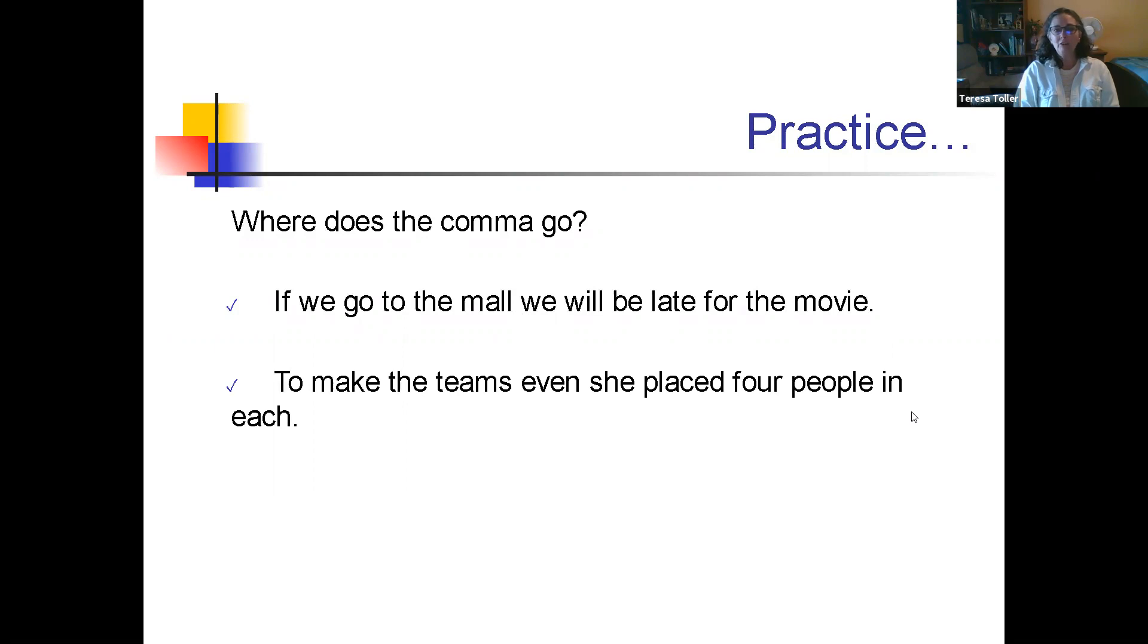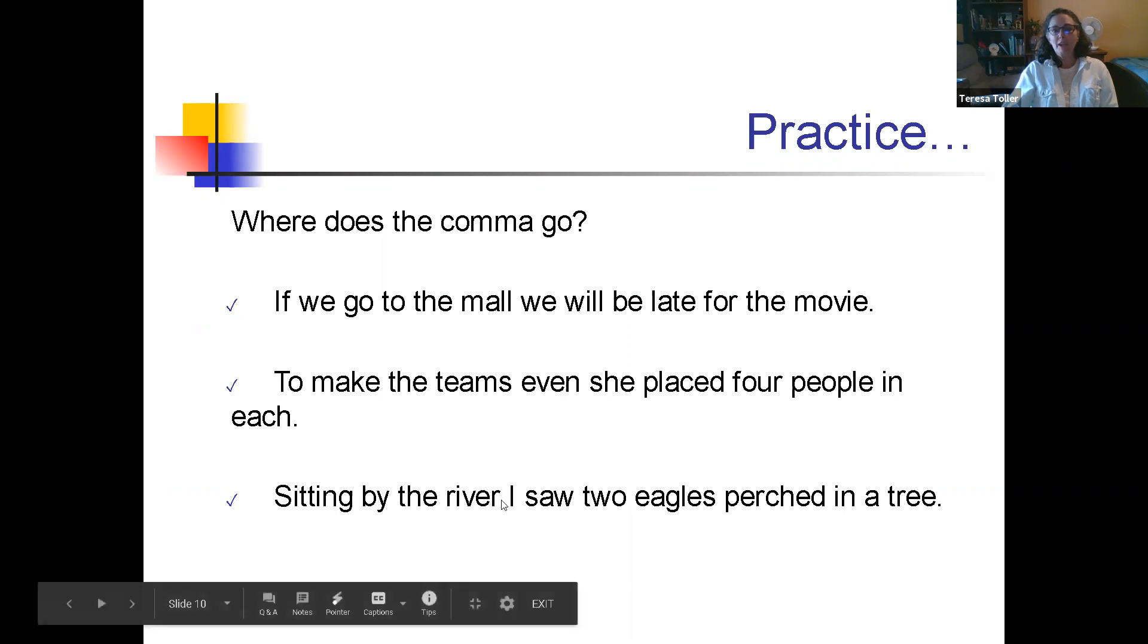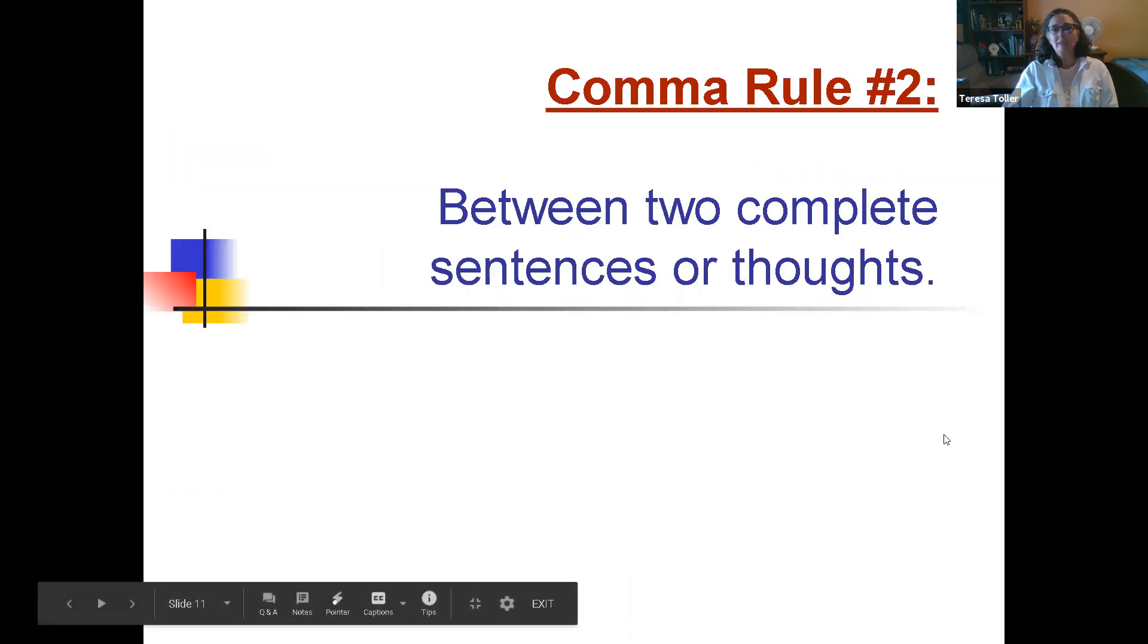Try saying that one out loud to see if you can find where to put the comma. It goes after even: to make the teams even, she placed four people in each. The comma this time goes after river. Sitting by the river, I saw two eagles perched in a tree.